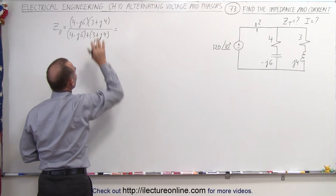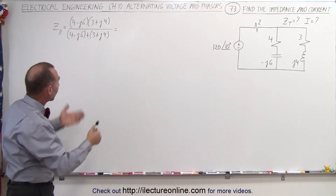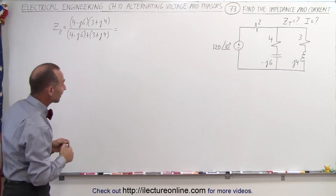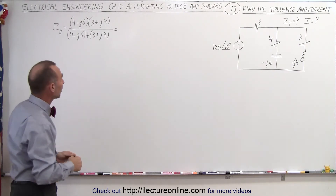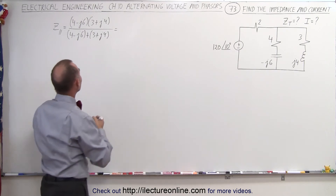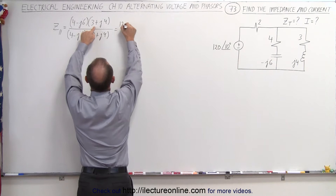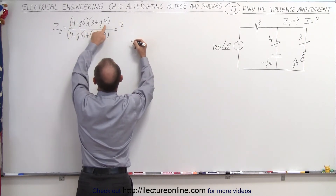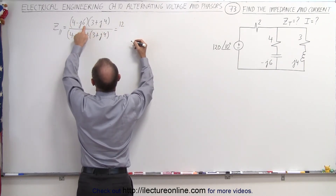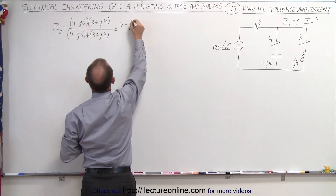On the numerator we could first convert those into magnitude and phase angle, or we could simply multiply the two imaginary numbers together — either way it's about the same amount of work. In the denominator it's easy to add. So here we multiply 4 times 3, which gives us 12; 4 times positive 4 is plus 16; 3 times minus 6 is minus 18; and 16 minus 18 gives us minus J2.